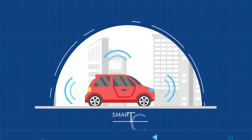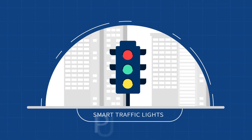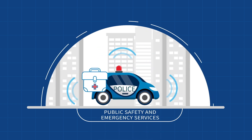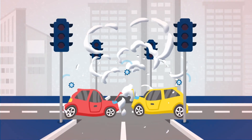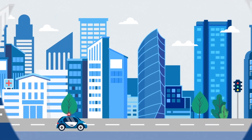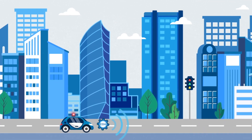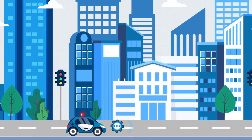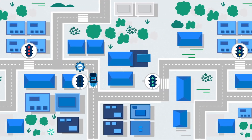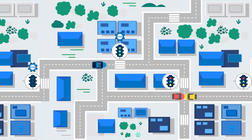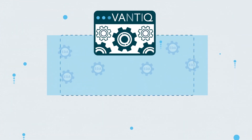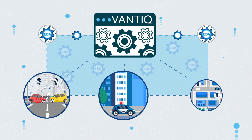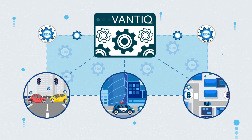For example, let's take connected cars, traffic lights, and public safety. When sensors in the car detect an accident, real-time alerts are sent to the nearest public safety official. A smart traffic control system automatically routes traffic so that emergency services can go directly to the scene. Bantic can sense and analyze the data from these systems and coordinate the complex reactions in real time.